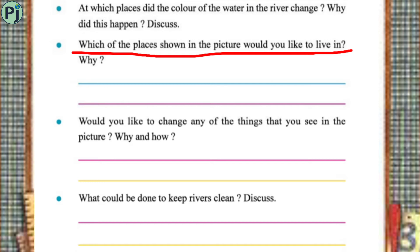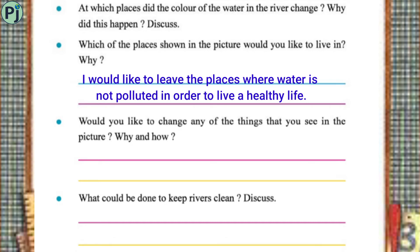Which of the places shown in the picture would you like to live in, and why? I would like to live in places where water is not polluted, in order to live a healthy life. Ek healthy life jeene ke liye main aisi jagah rehna pasand karuungi jahan nadi ka paani polluted nahin, saaf hai.